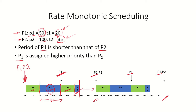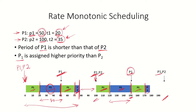The processor sits idle from time 75 because both processes have completed their current bursts. At time 100, both P1 and P2 arrive again in the system. The same pattern repeats: P1 runs first, then P2 runs for 30 time units until it is preempted again by P1 arriving at time 150. P1 uses the processor for 20 time units, and P2's remaining 5 units complete after that. This continues as the periodic real-time processes keep entering the system.